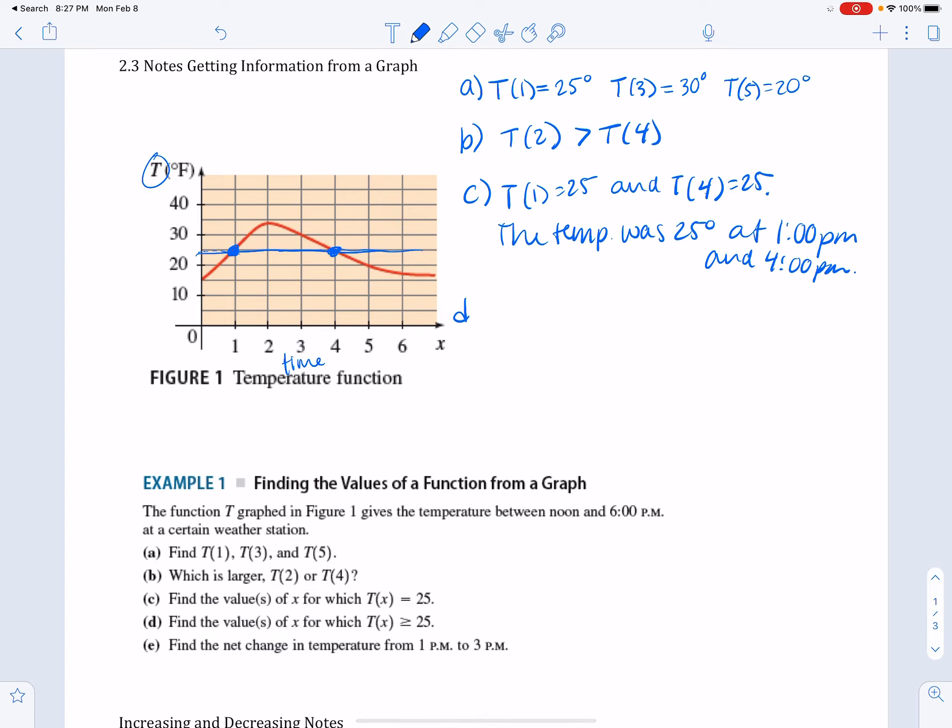Part D: find the values of x for which T(x) is greater than or equal to 25. So we need all values where it's this line and above, and we can see that it's only above 25 degrees right here in between those two values and including those two values. So we're going to write: the temperature was 25 or greater between 1 o'clock and 4 o'clock.